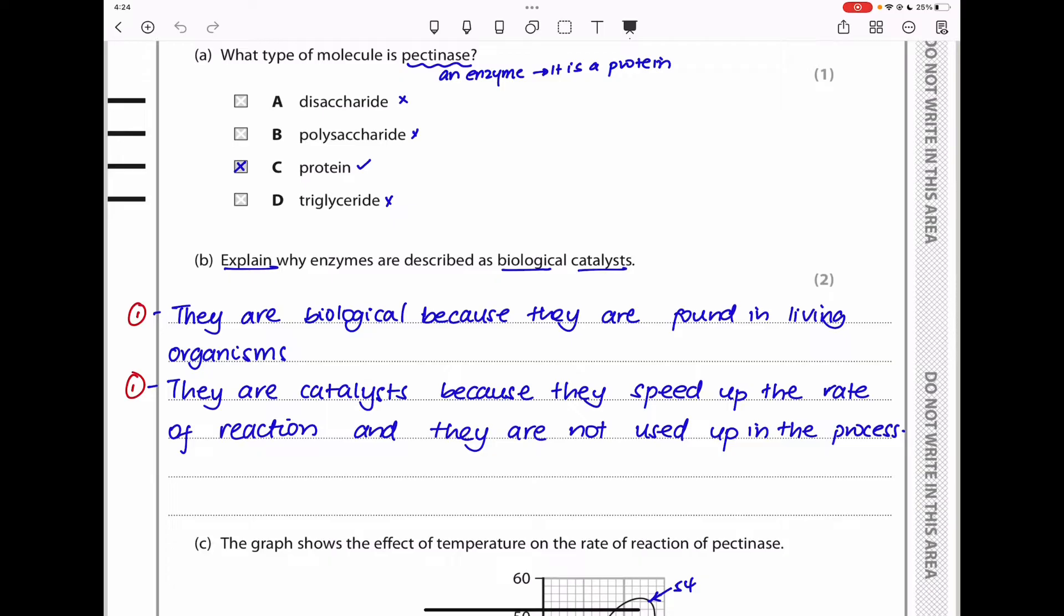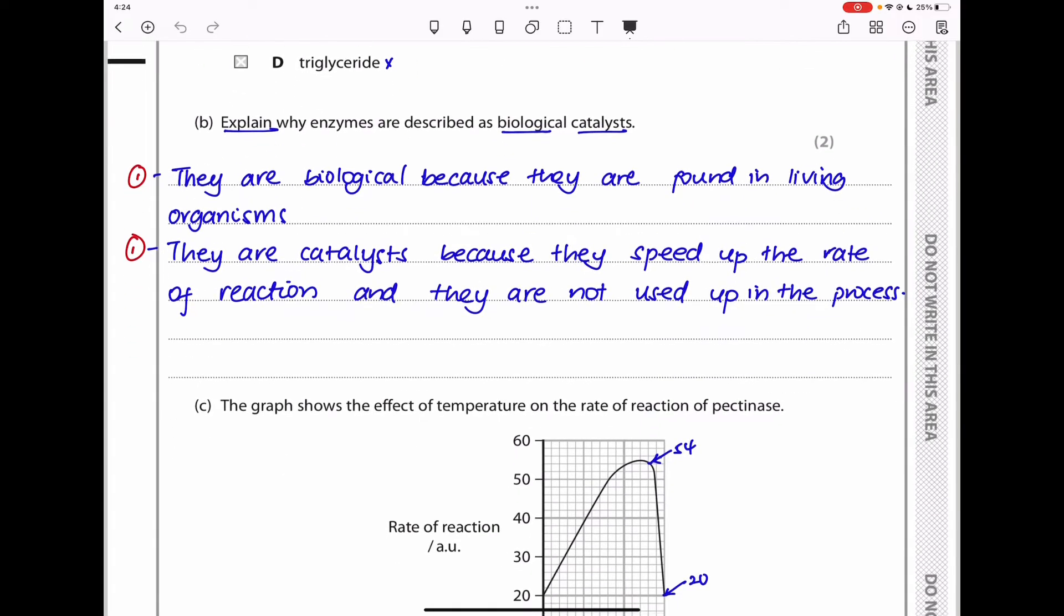Part B says explain why enzymes are described as biological catalysts. You have to focus on the word biological and then focus on the word catalysts. They are biological because they are formed in living organisms, or they perform their role in living organisms. They are catalysts because they speed up the rate of reactions and they are not used up in the process. A catalyst speeds up the rate of a reaction and it's never used up. If you answered like this, you would get your two marks.